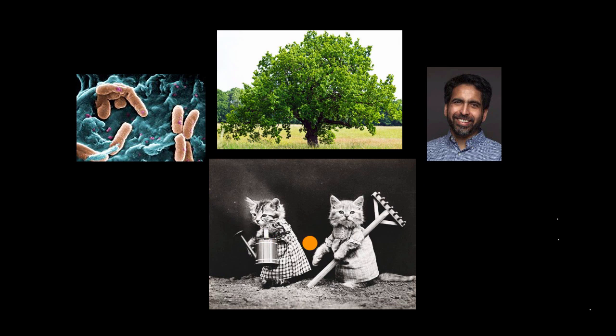Or seemingly well-dressed agriculture kittens, which are also made of trillions and trillions of cells — they all share a common ancestor.